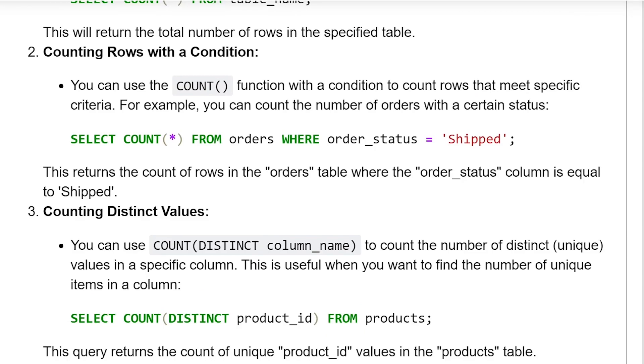Second, counting rows with a condition. You can use the count function with a condition to count the rows that meet specific criteria. For example, you can count the number of orders with a certain status.